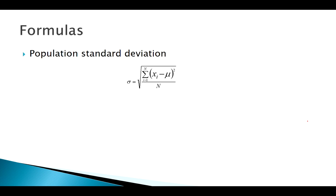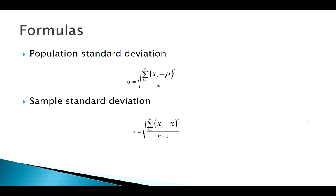We know how to calculate population standard deviation Sigma and sample standard deviation S. The same idea applies to both: take each value, subtract the mean, square it, add them all up, and divide. The big difference is that for population standard deviation we divide by n, but for sample standard deviation we divide by n minus one.